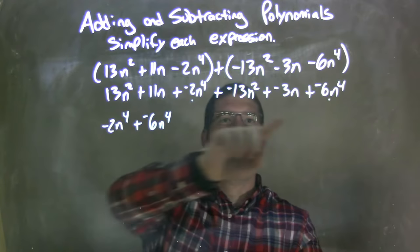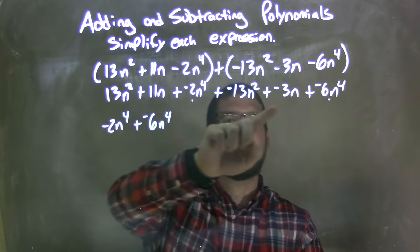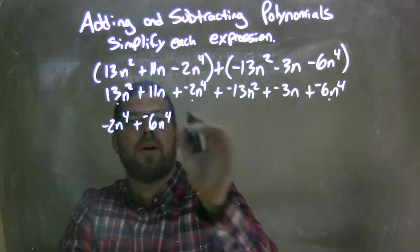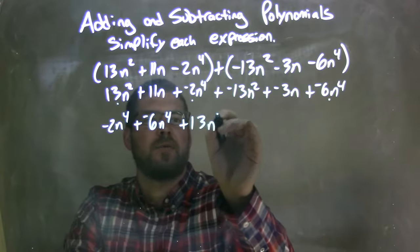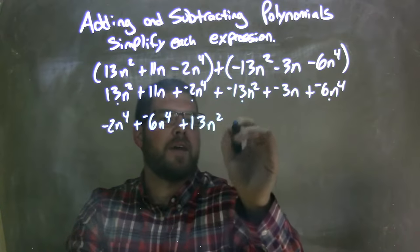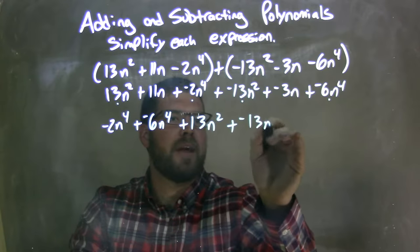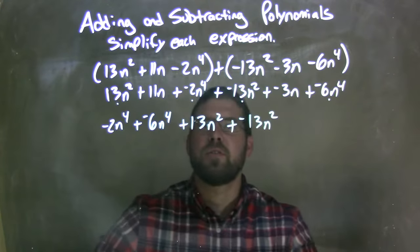Next highest degree, I see there's no third power, but there's something to the second power, there's two terms. So I'm going to add a 13n squared here. And then this one here, another one, is adding a negative 13n squared. I don't see anything else to the second power.